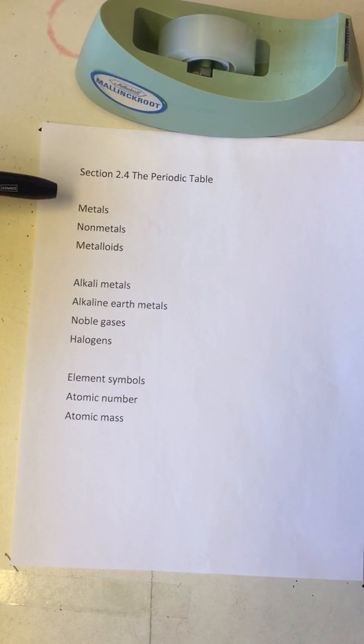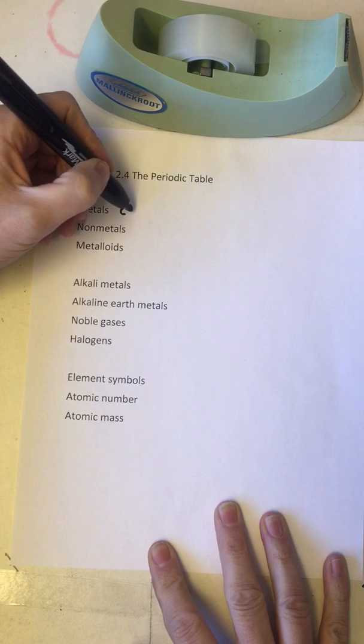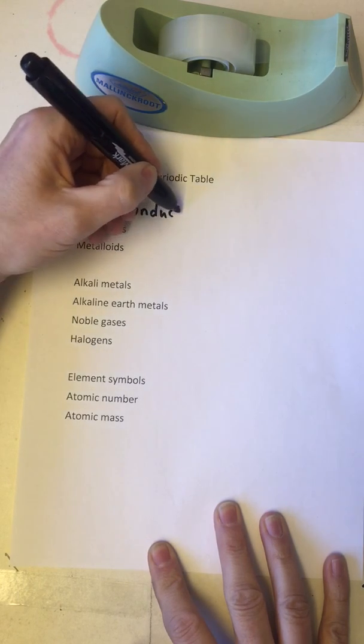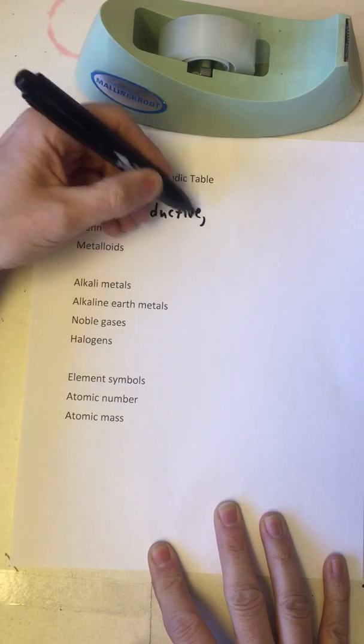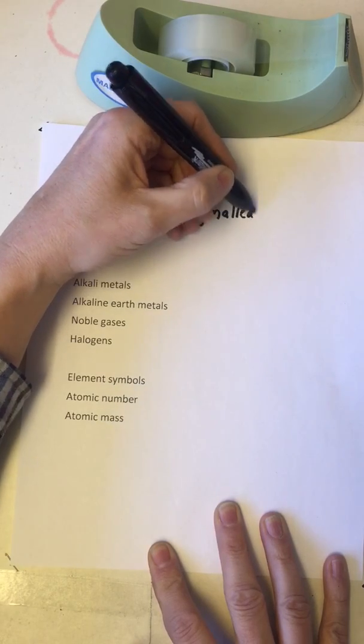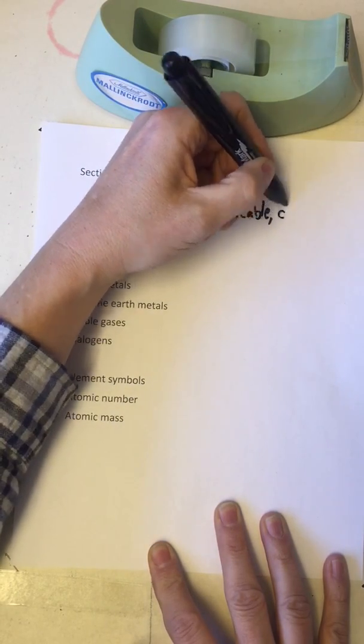Metals are elements in the periodic table that are electrically conductive, thermally conductive so they heat up very well, they're also very malleable and ductile. So conductive, malleable, and ductile.